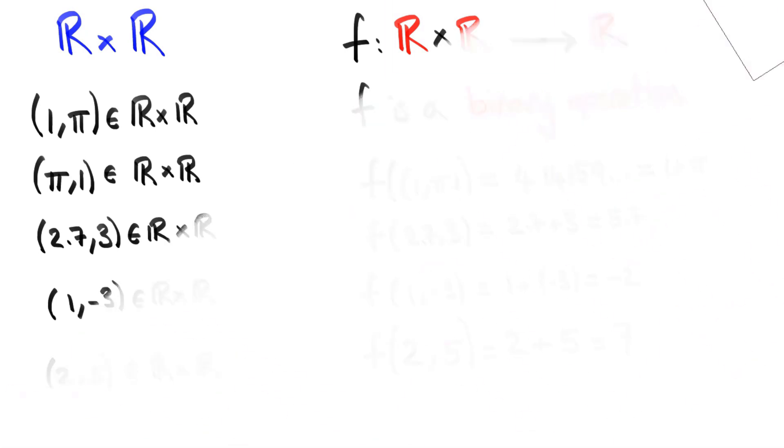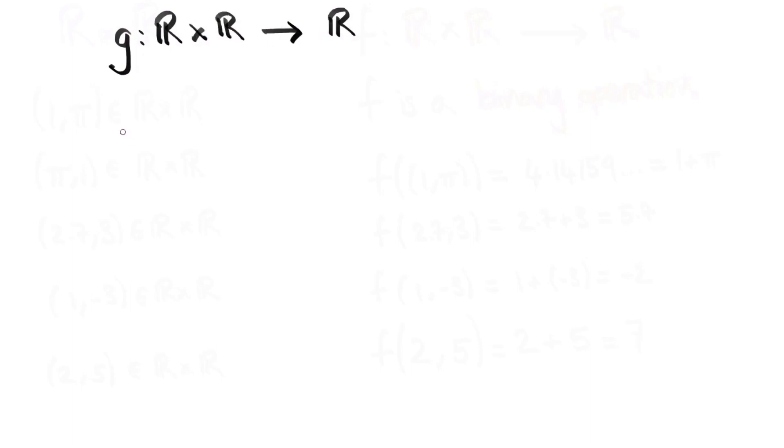And I've got just a quick problem for you today. I'm going to define a new binary operation g that goes from r cross r to r. And g when applied to 1 pi returns pi and g of 2 5 is equal to 10. I just want you to tell me what binary operation do you think this is?